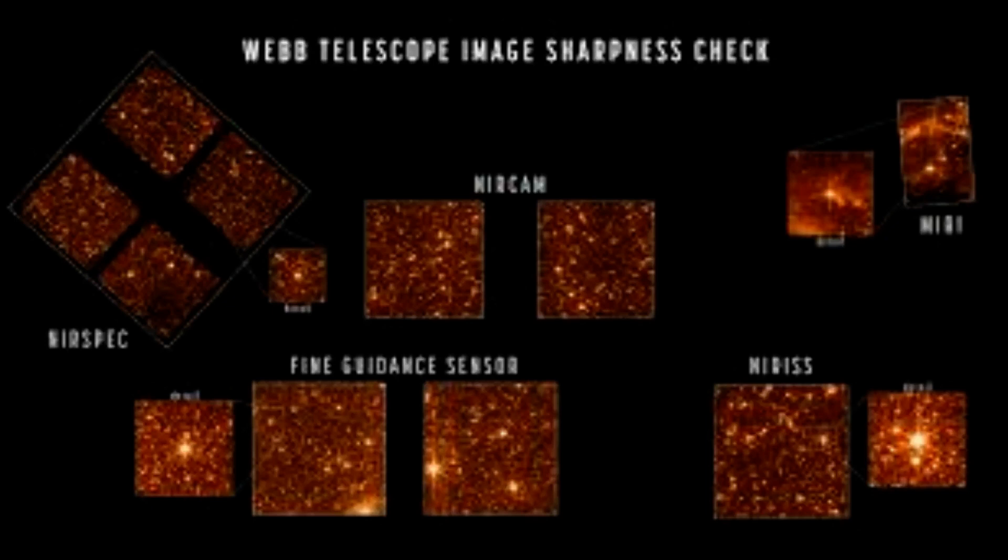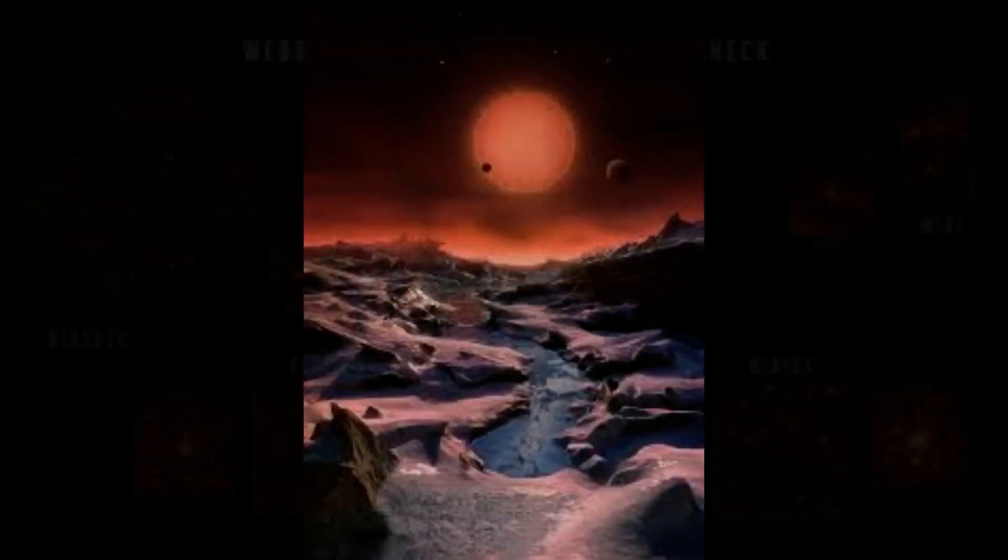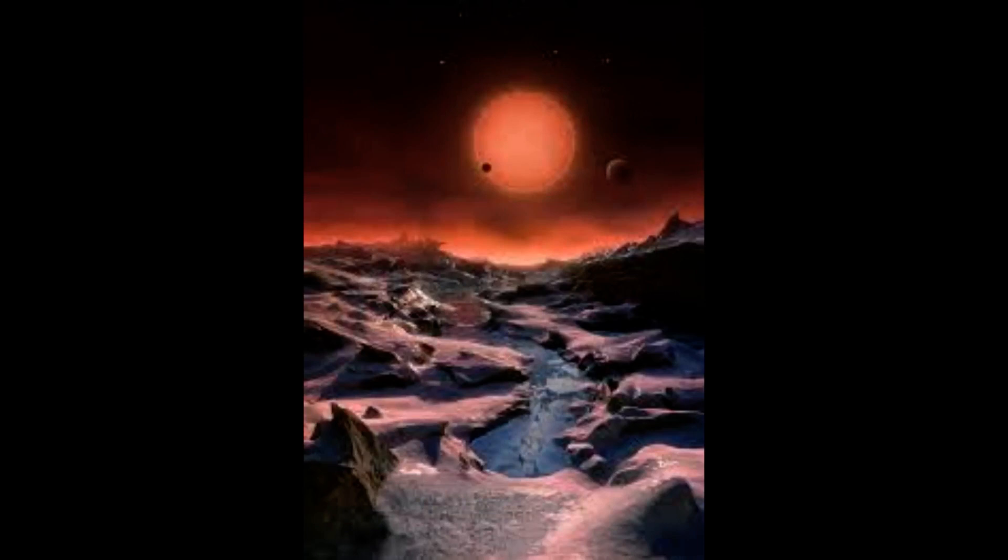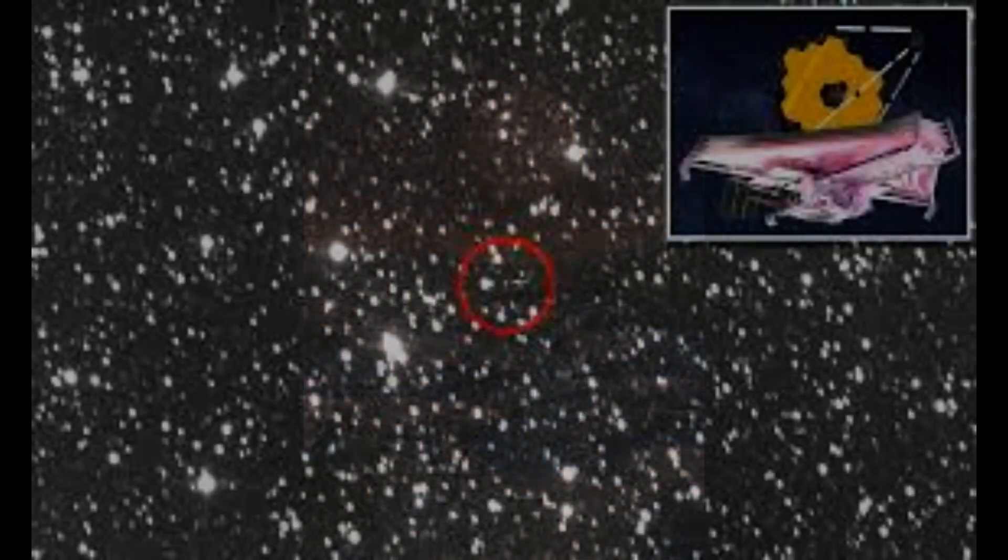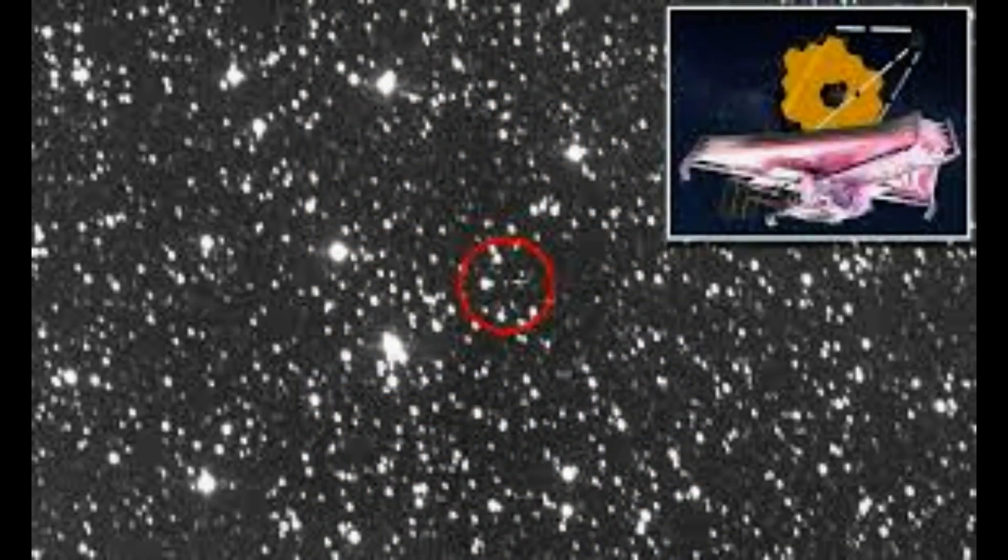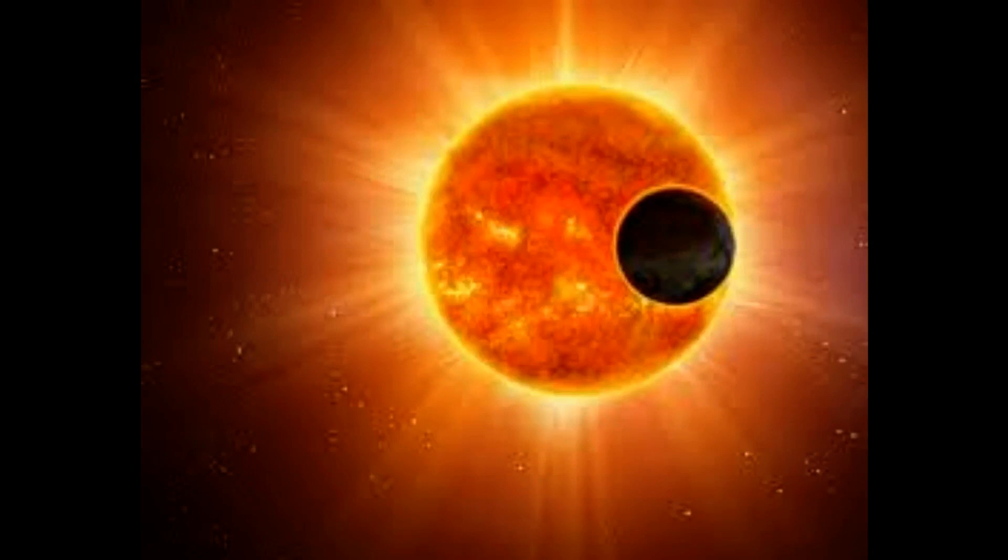NASA explained the telescope's perspective: "Webb can capture images and spectra with the spectral resolution needed to study short-term phenomena like dust storms, weather patterns, seasonal changes, and in a single observation, processes that occur at different times—daytime, sunset, and nighttime—of a Martian day."